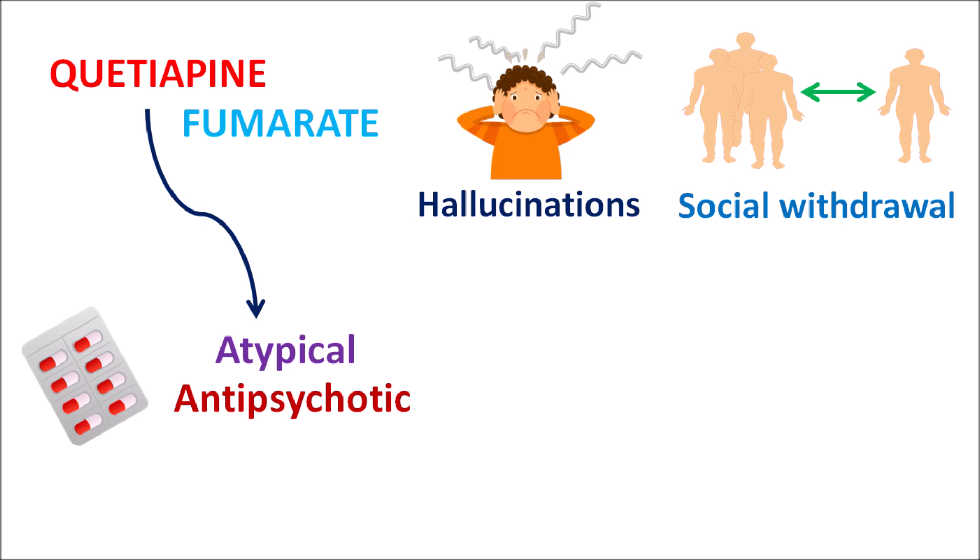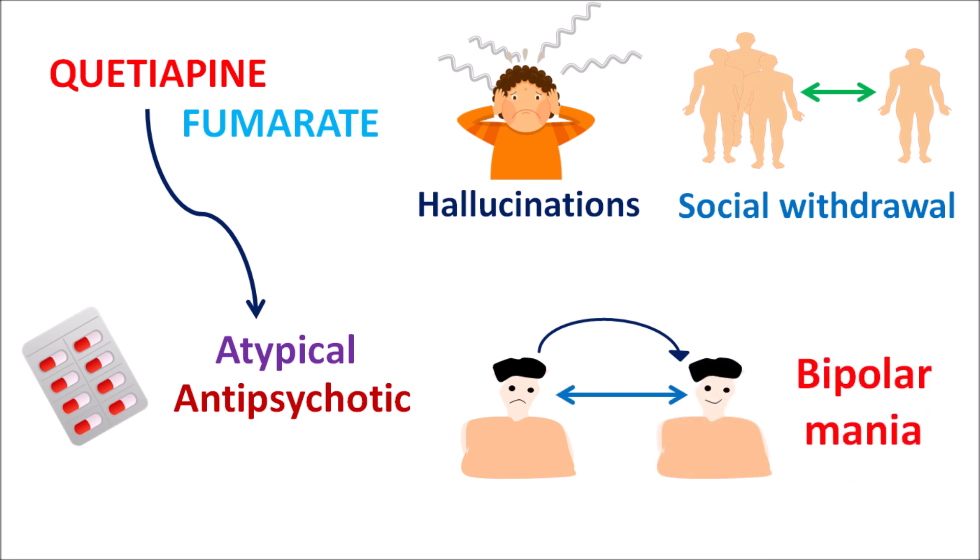Apart from these clinical indications, in some patients we can observe mood swings from depression to mania or mania to depression. Such bipolar mania disorders are again controlled by Quetiapine. So it can be used both in psychosis as well as in the treatment of bipolar mania. Being an atypical antipsychotic, this drug theoretically produces less extrapyramidal side effects, but still we have to consider a few precautions with use of Quetiapine fumarate.